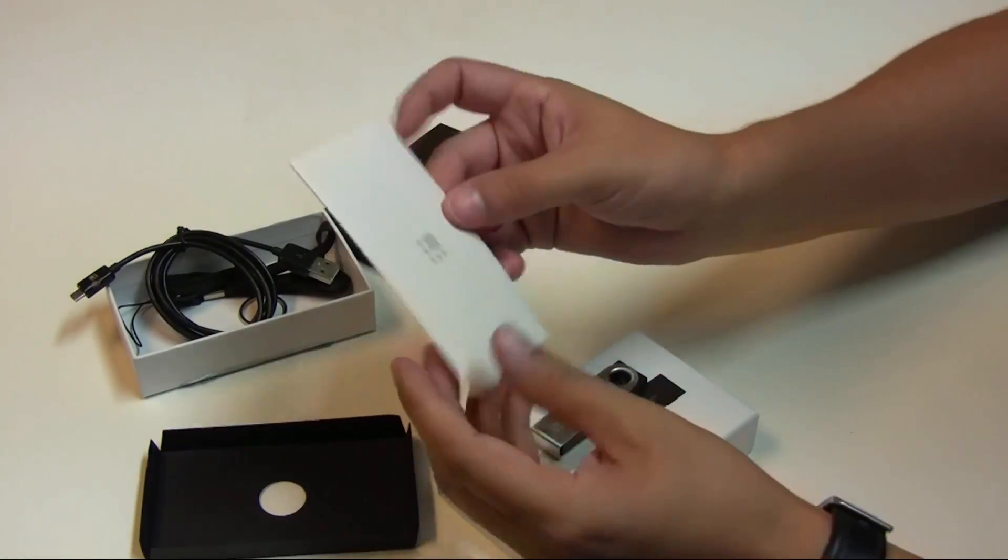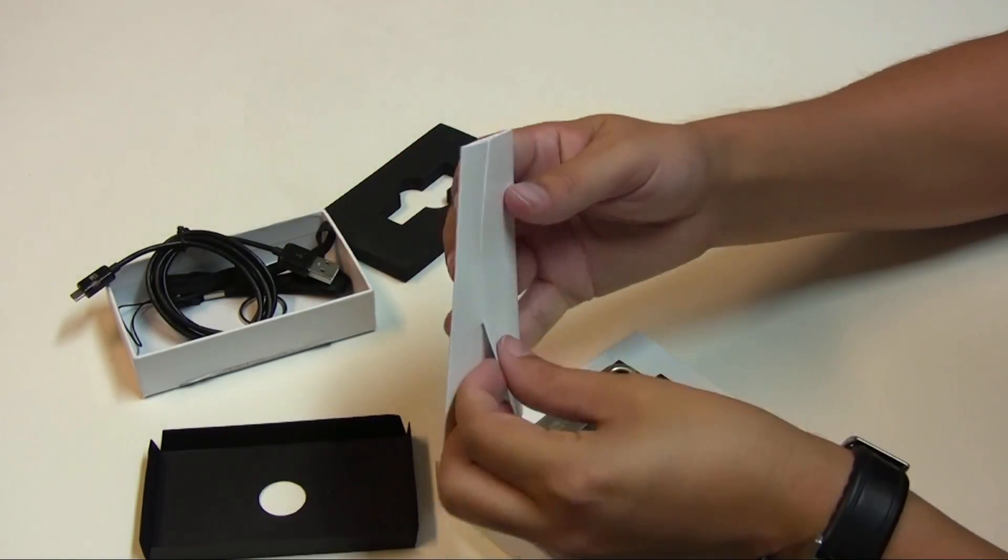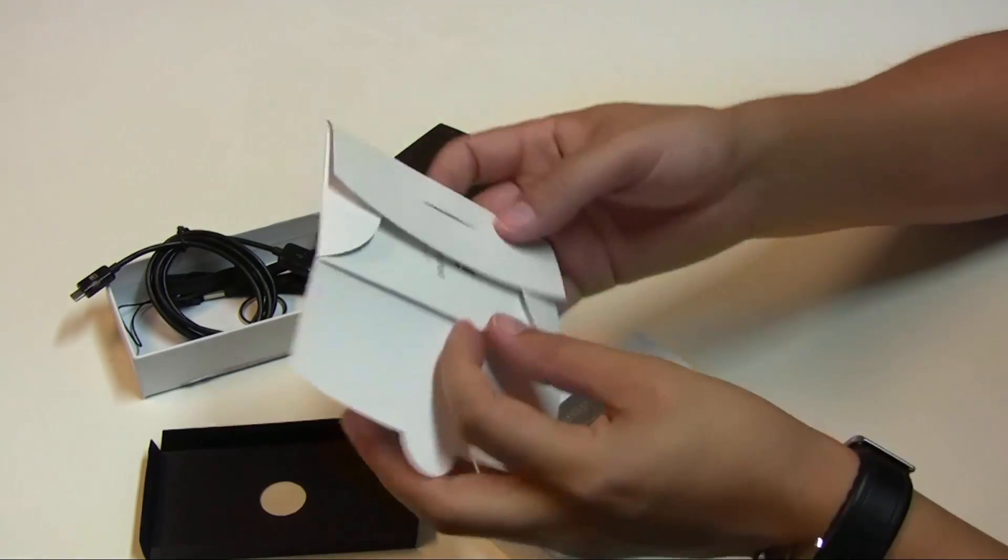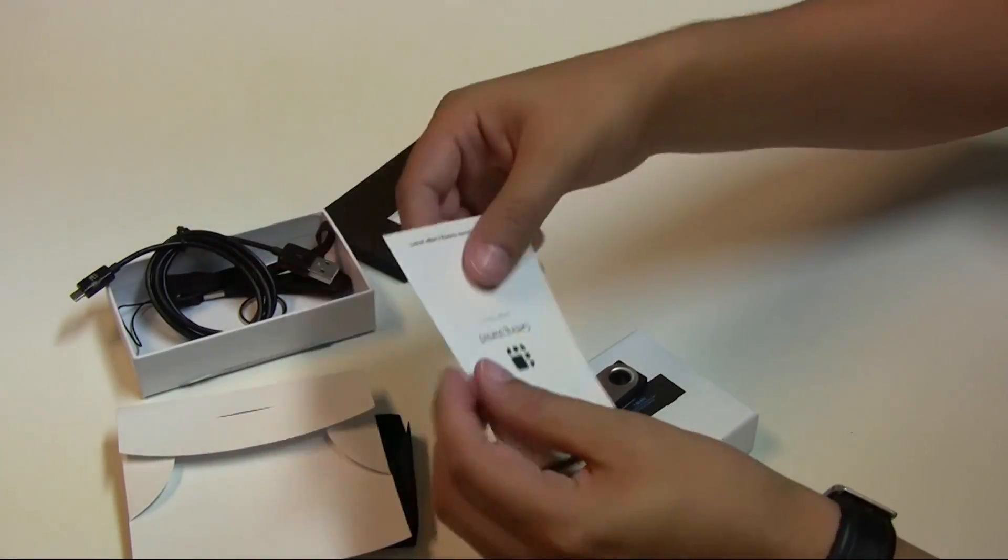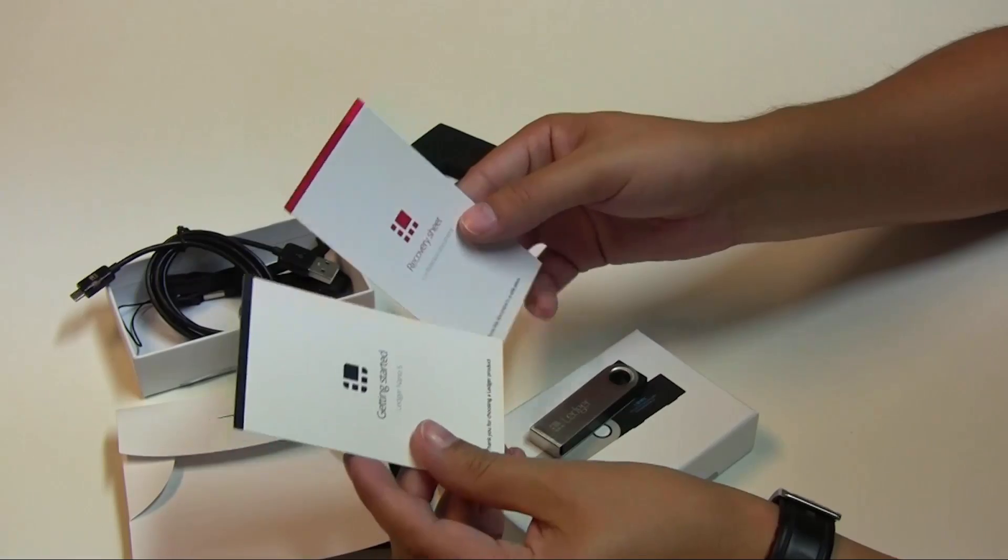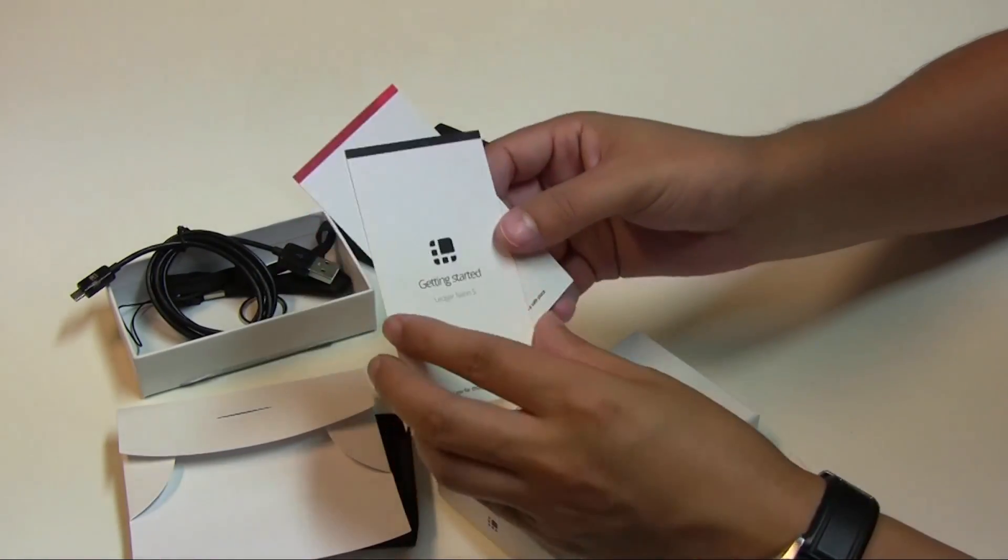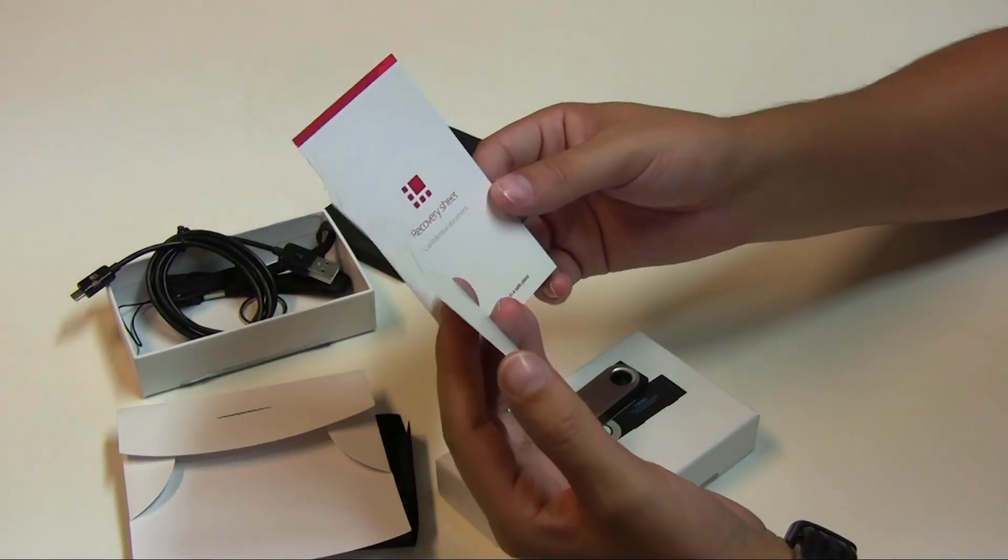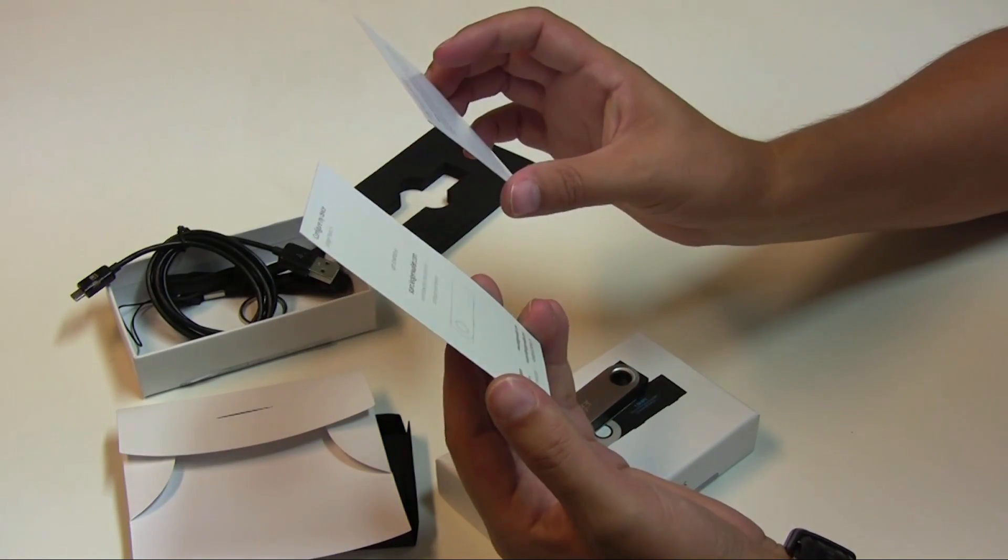Let's have a look inside here. So just a little casing. So we've got some information. We've got a getting started sheet, a little card, and we also have a recovery card as well.